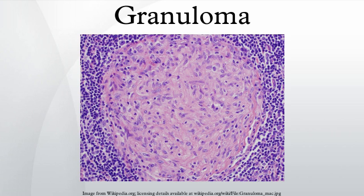Rheumatic fever is a systemic disease affecting the peri-arterial connective tissue and can occur after an untreated group A beta-hemolytic streptococcal pharyngeal infection. It is believed to be caused by antibody cross-reactivity.